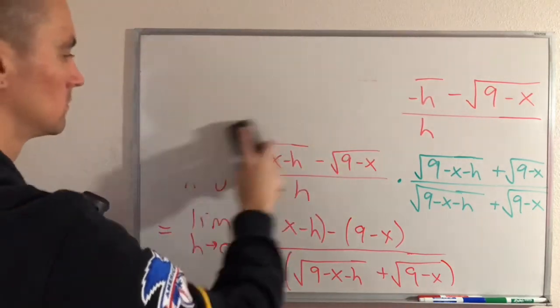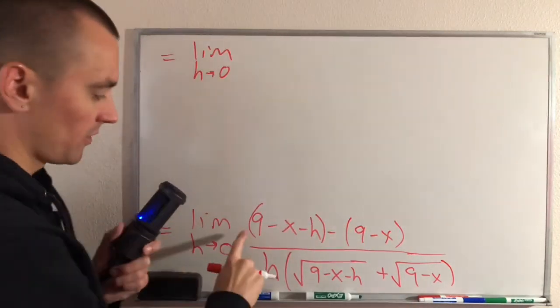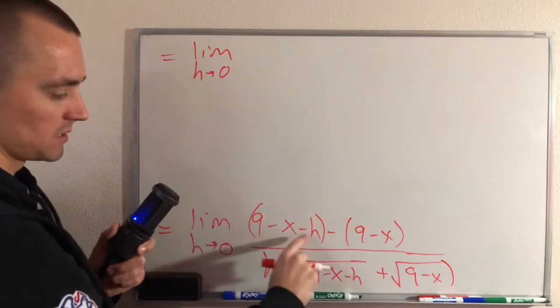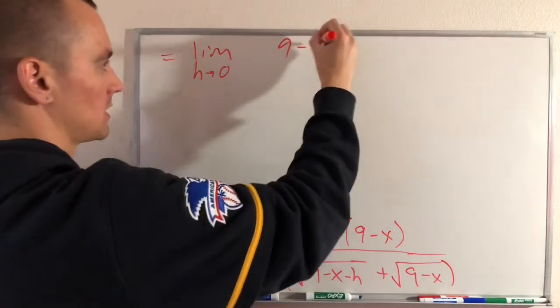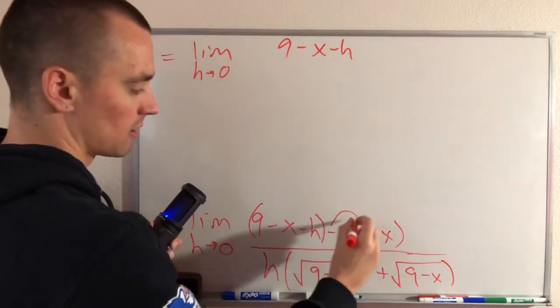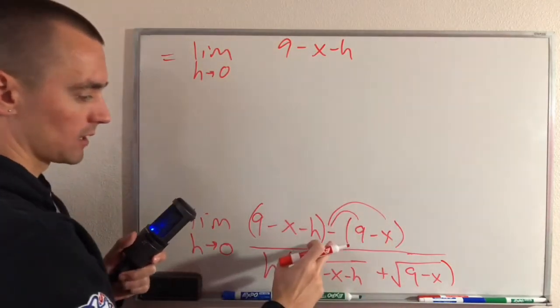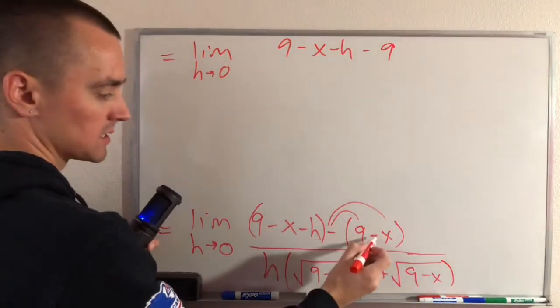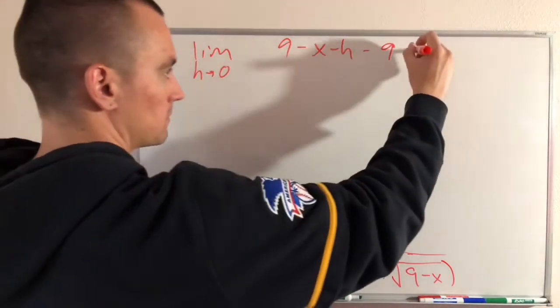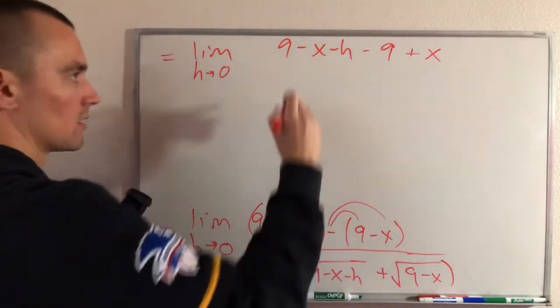We already have that on the bottom here so all we really have to do is start with simplifying the numerator and see if we can pull an h out of it. So to simplify this, this first set of parentheses isn't really doing anything so we're just gonna get 9 minus x minus h and then here we have to distribute our negative sign into the parentheses so we're gonna get minus 9 and then minus negative x is gonna turn into a plus x.